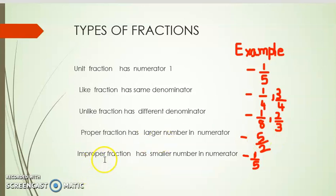Then improper fraction has smaller number in numerator. In this fraction 1 by 5, it has smaller number 1 in numerator. So it is called improper fraction.